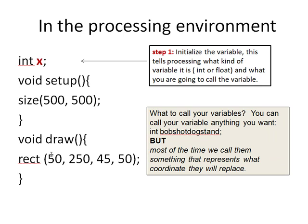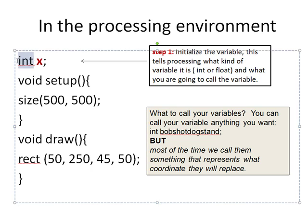In the processing environment you call your variables up at the top of your sketch. So here's my void setup and my void draw. So our very first step is we do what's called initialize the variable. And that's telling processing what type of variables this is going to be. So meaning it's going to equal a number that is a whole number. And what am I calling it? So remember this is user defined. I'm calling it x.